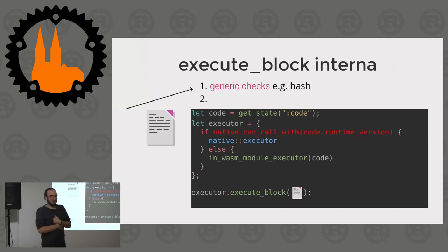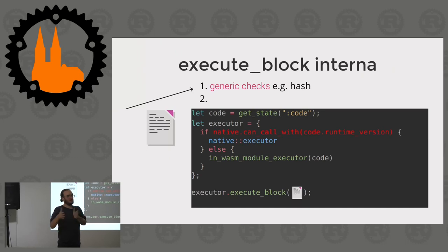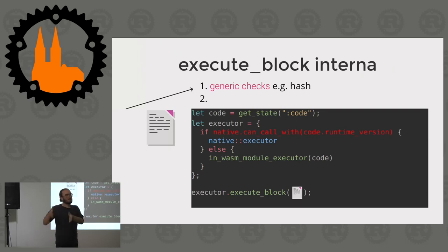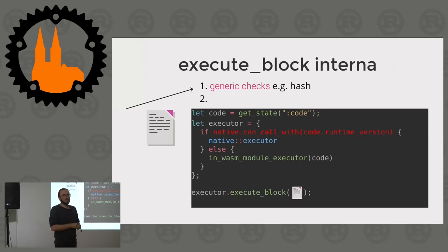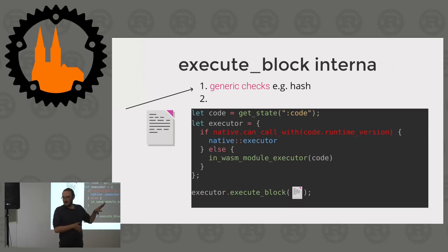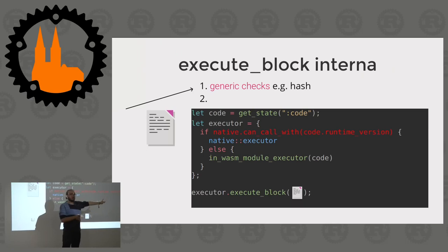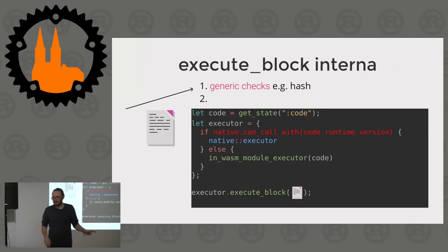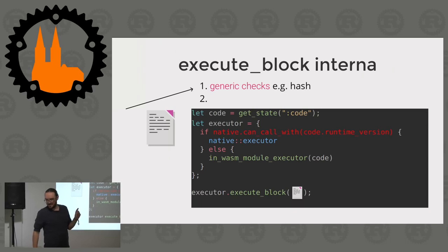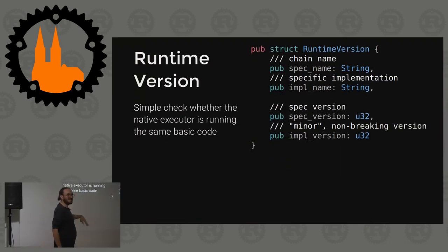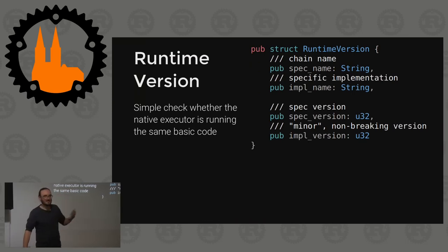For us at Parity, the Rust code base for the Wasm binary and the Rust code base for the executors are actually the same Rust code base - we simply build that new version. However, if you are running an older client and have not upgraded recently, your version might not be compatible, so what you do is build that sandbox environment and run the new block through the code that was actually put on the chain.